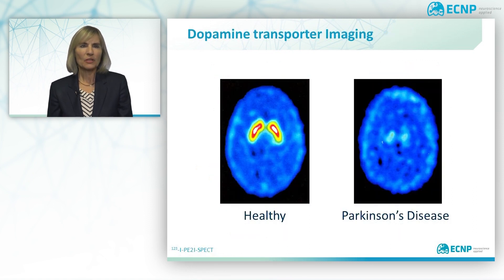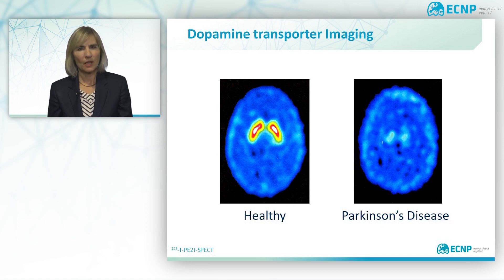Emission tomography — in this case SPECT — can also be used for diagnosing brain disorders. With appropriate radioligands, one can image the striatal dopamine transporters, and this can assist the diagnosis of conditions with dopaminergic dysfunction, such as in Parkinson's disease.